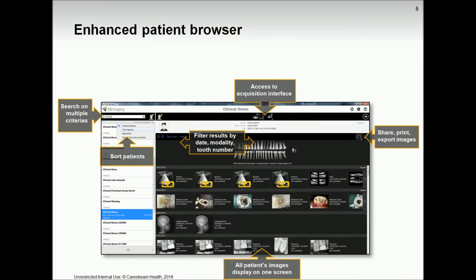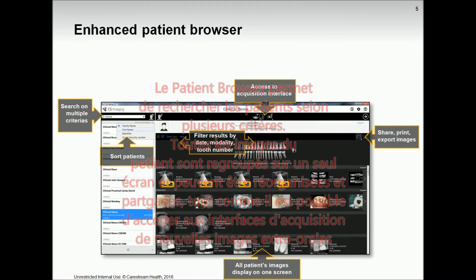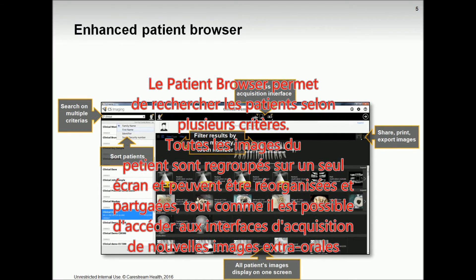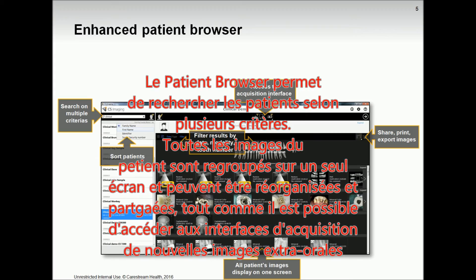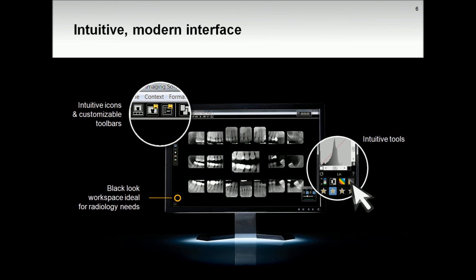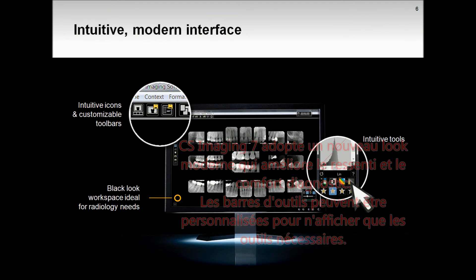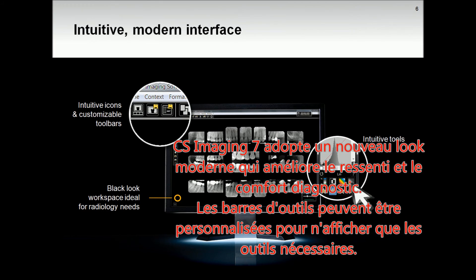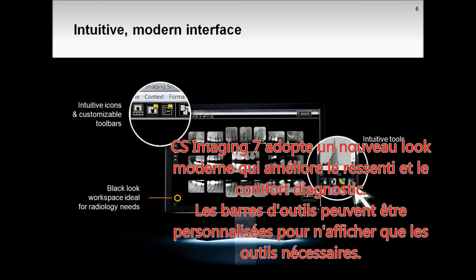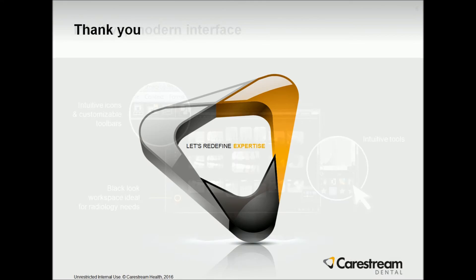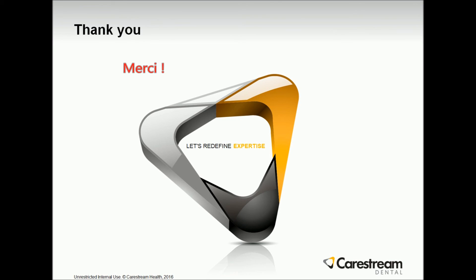When used standalone, the patient browser allows searching for patients under a number of criteria. All images are accessed on one screen and can be organized and shared, with access to acquisition interfaces for extra oral images. CS Imaging 7 adopts the modern black look, which enhances image contrast and improves diagnostic comfort. Redesigned icons aid with day-to-day tasks, while toolbars can be customized to display the exact tools required. Thank you for following this quick overview of CS Imaging version 7.